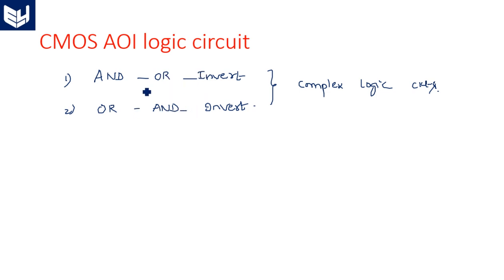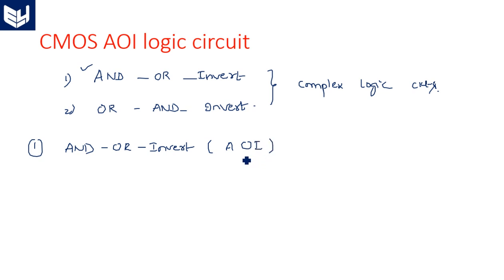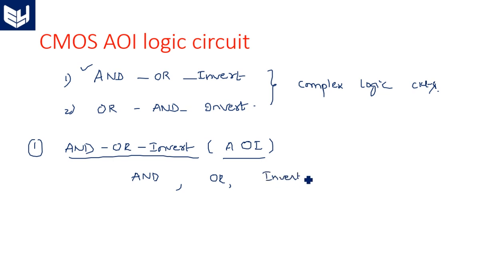In this video we are going to study about AND-OR-INVERT, or in short AOI. It is the basic standard complex circuit for CMOS logic circuits. In AND-OR-INVERT circuits, first we perform the AND operation, then the OR operation, and then the inverting operation. These three operations are serially performed.